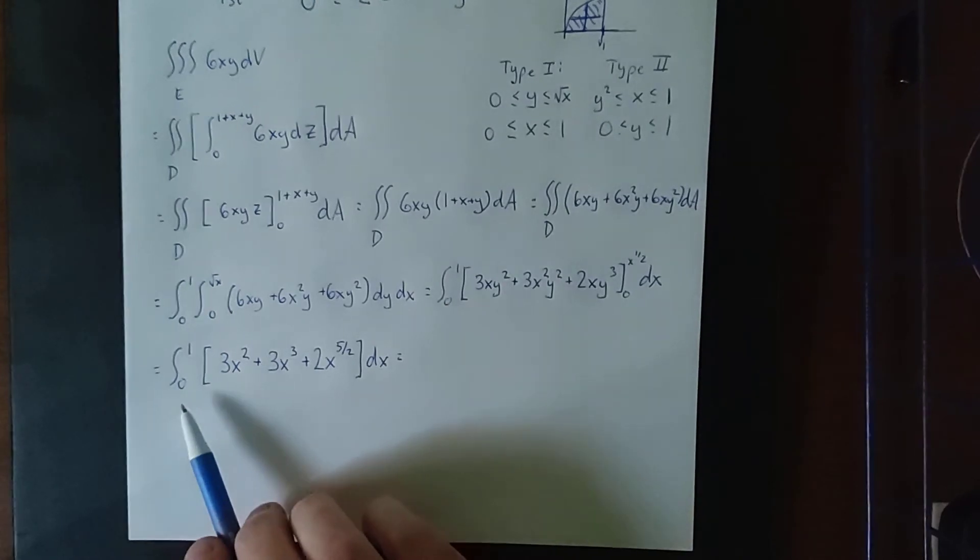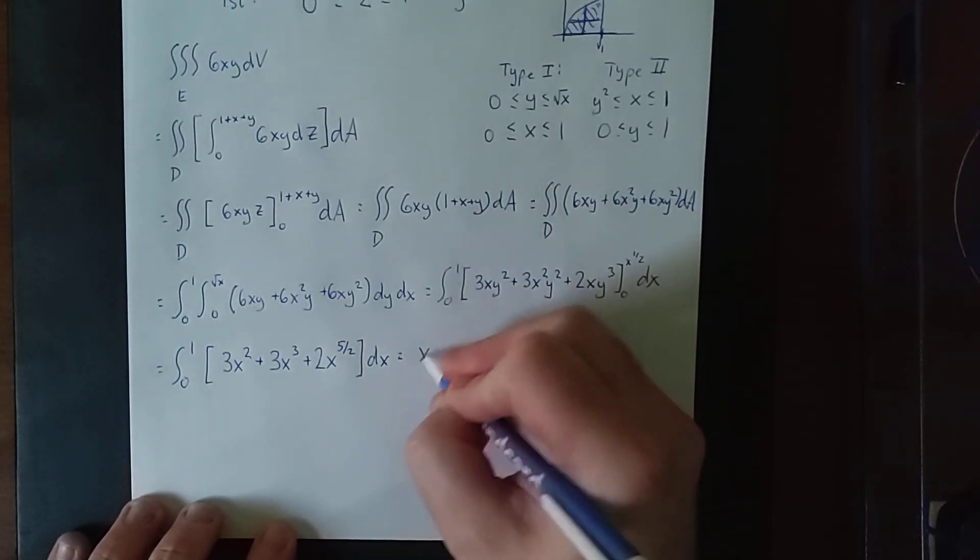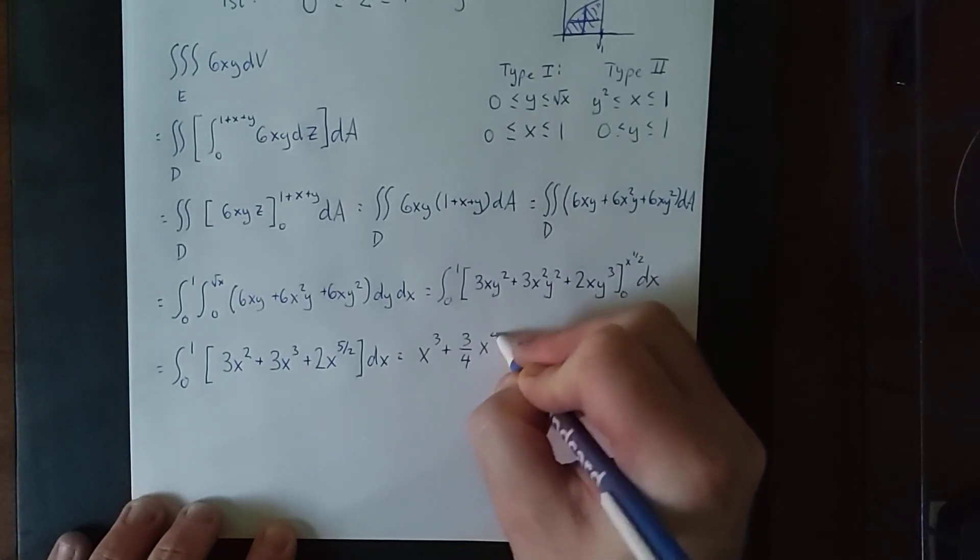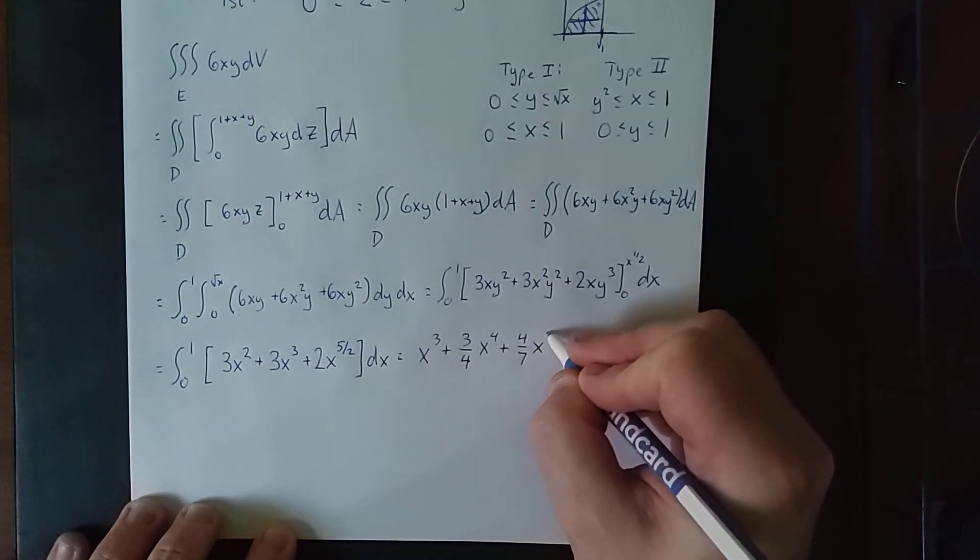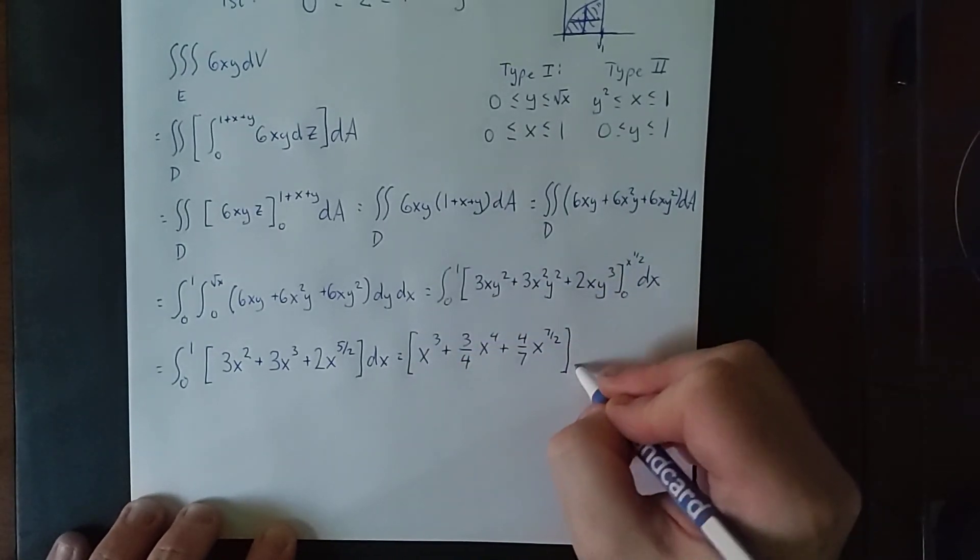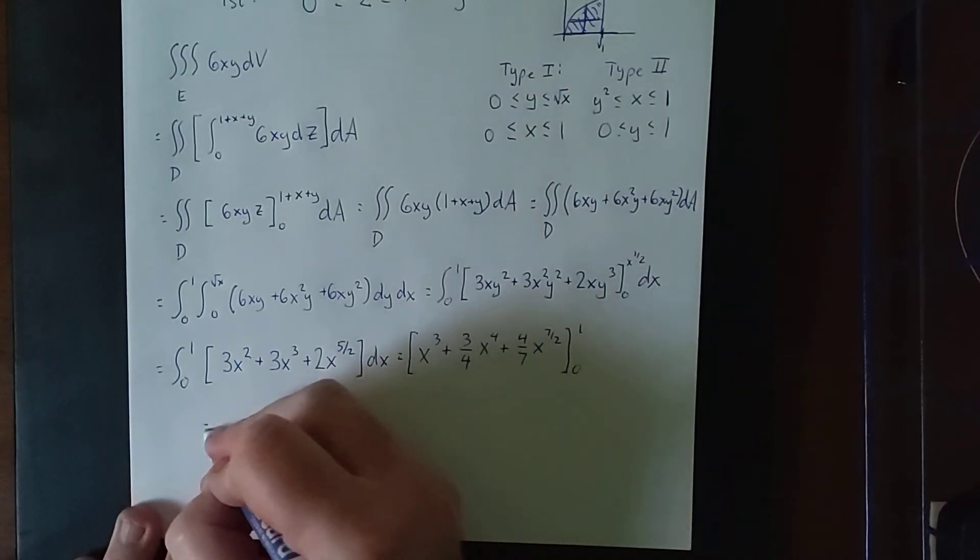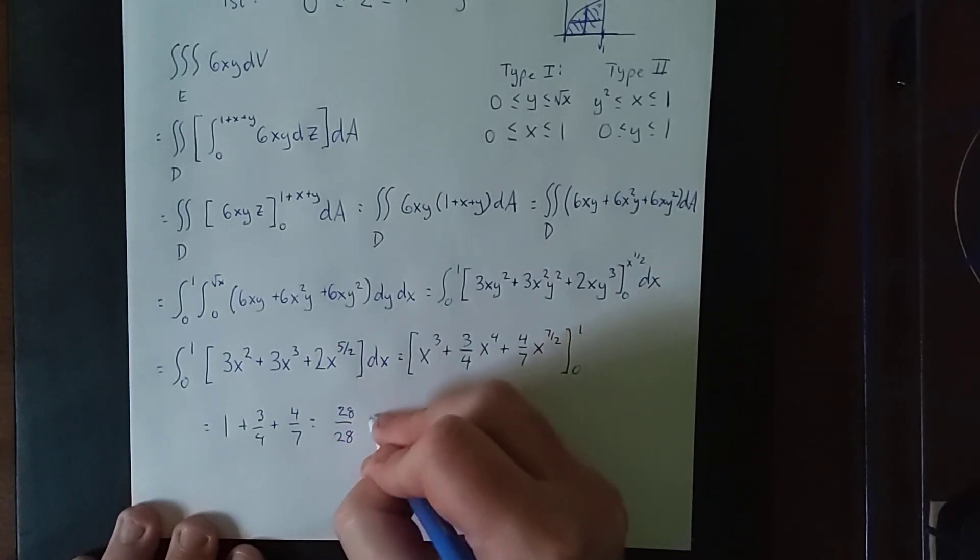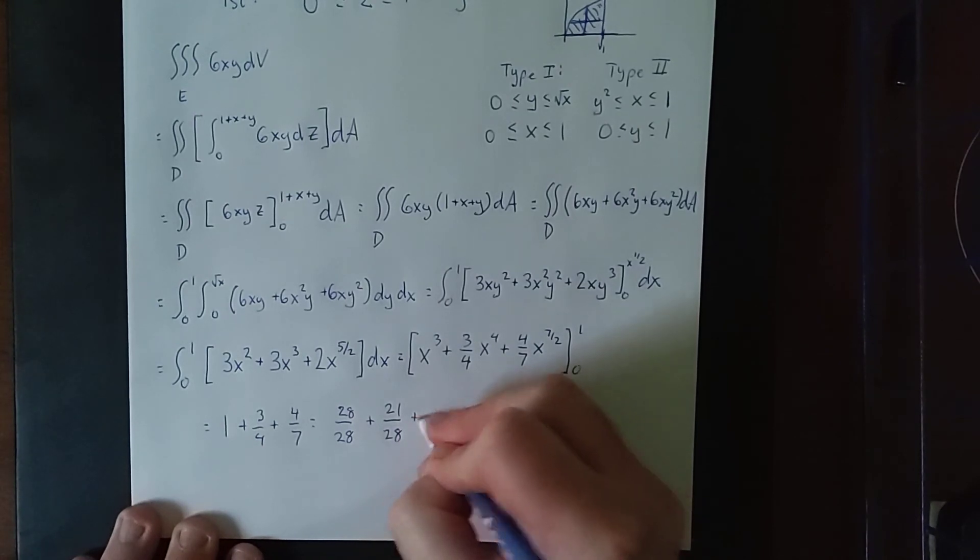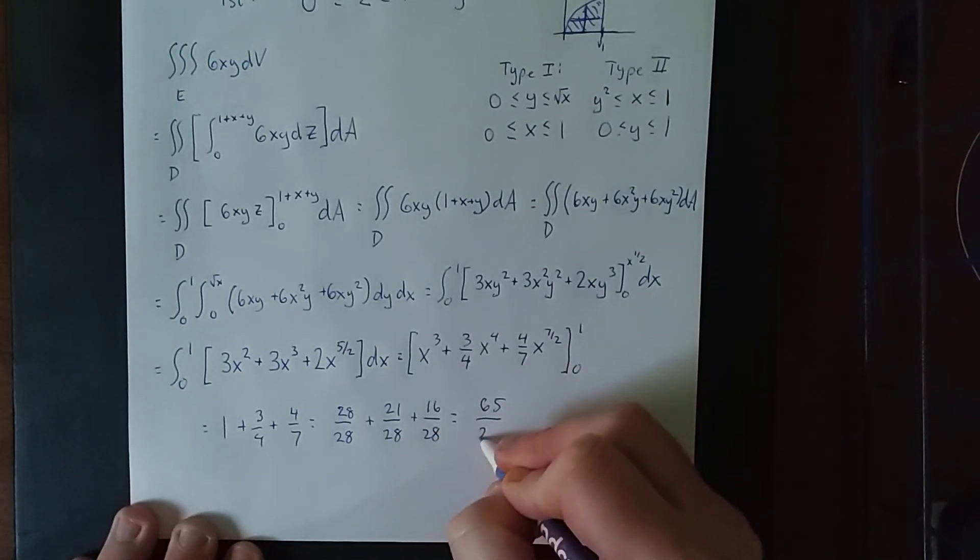The single integral or definite integral from 0 to 1 of 3x squared plus 3x cubed plus 2x to the 5 halves power. All of these can be evaluated using the power rule. So 7 halves multiplied by 2 sevenths will be 4 sevenths x raised to the 7 halves power. Now plugging in 1 will give us just the coefficients. Plugging in 0 will zero everything out. So we're going to have 1 plus 3 fourths plus 4 sevenths. Establishing a lowest common denominator of 28, we'll call this 28 28ths plus 21 28ths plus 16 28ths. 65 over 28.